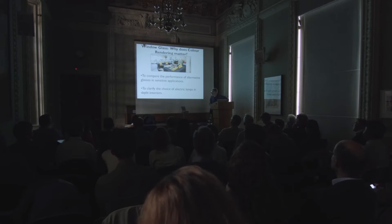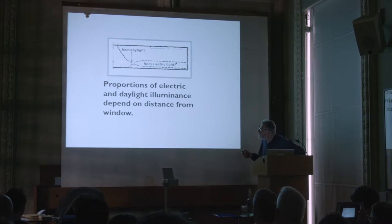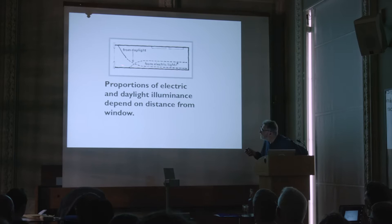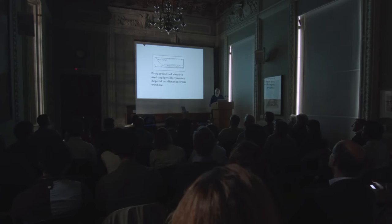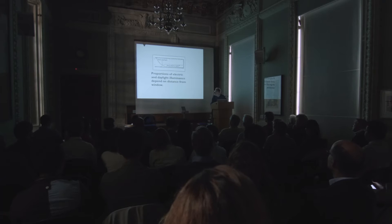But it's also important because it helps us to clarify the choice of electric lamps in daylight interiors. In this part of the room, obviously, most of the light comes from daylight, and here most of the light comes from electric light. So the color rendering of the light is determined here by daylight, here mainly by electric light, and the important thing to realize is that the color rendering properties of the lighting vary from point to point in a room. As soon as you put tinted glass in the window, it raises all sorts of questions.